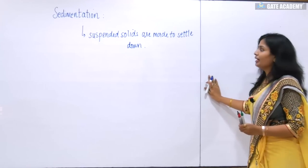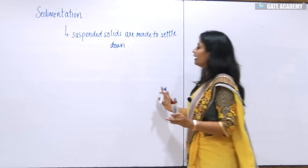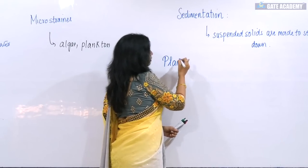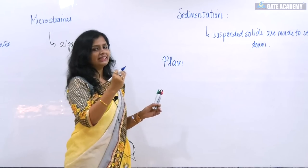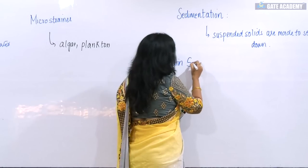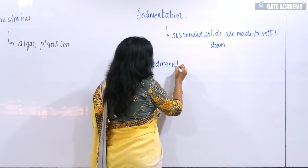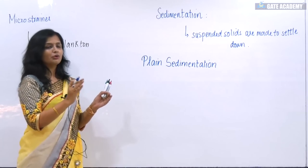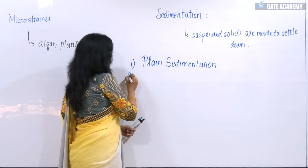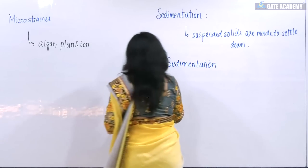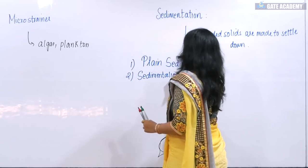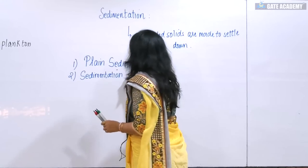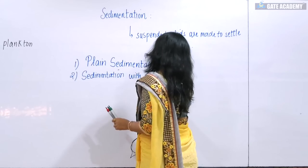We will have two types of sedimentation. One is plain sedimentation — water is placed and particles settle. But sometimes components of the water will not fall down; they are floating and will not settle on their own. In that case, we use sedimentation with coagulation. This is an important part of sedimentation because there are many numericals, so your concept should be clear to solve them.